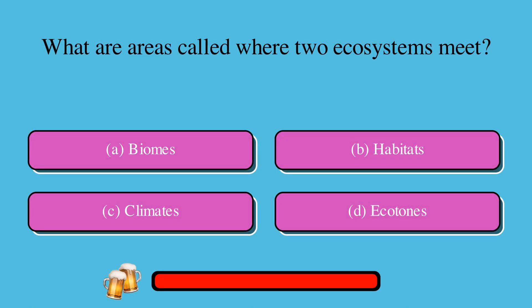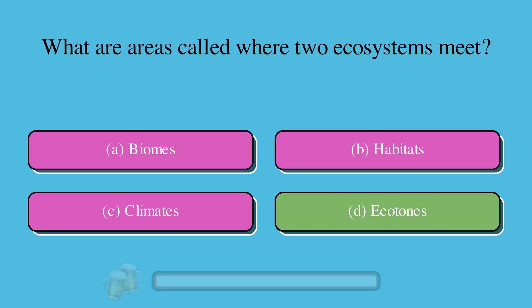What are areas called where two ecosystems meet? A. Biomes, B. Habitats, C. Climates, or D. Ecotones? The correct answer is D. Ecotones.